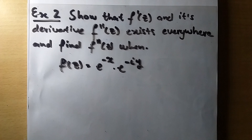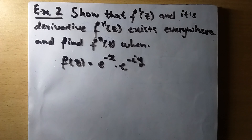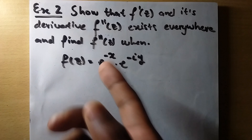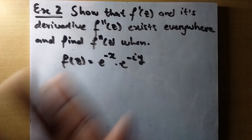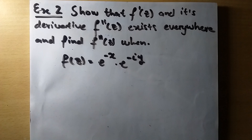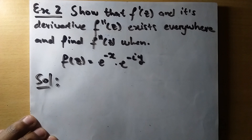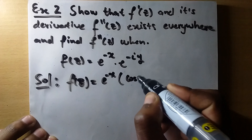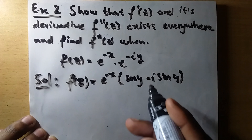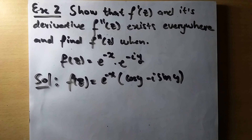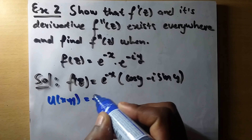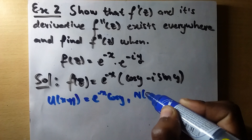Now let us look at Example 2 from the previous session. The question says: show that f'(z) exists everywhere and find the second derivative, given the function f(z). The solution begins by rewriting f(z) as e^(-x) times (cos y − i sin y). We then identify u(x,y) = e^(-x) cos y, and v(x,y) = −e^(-x) sin y.